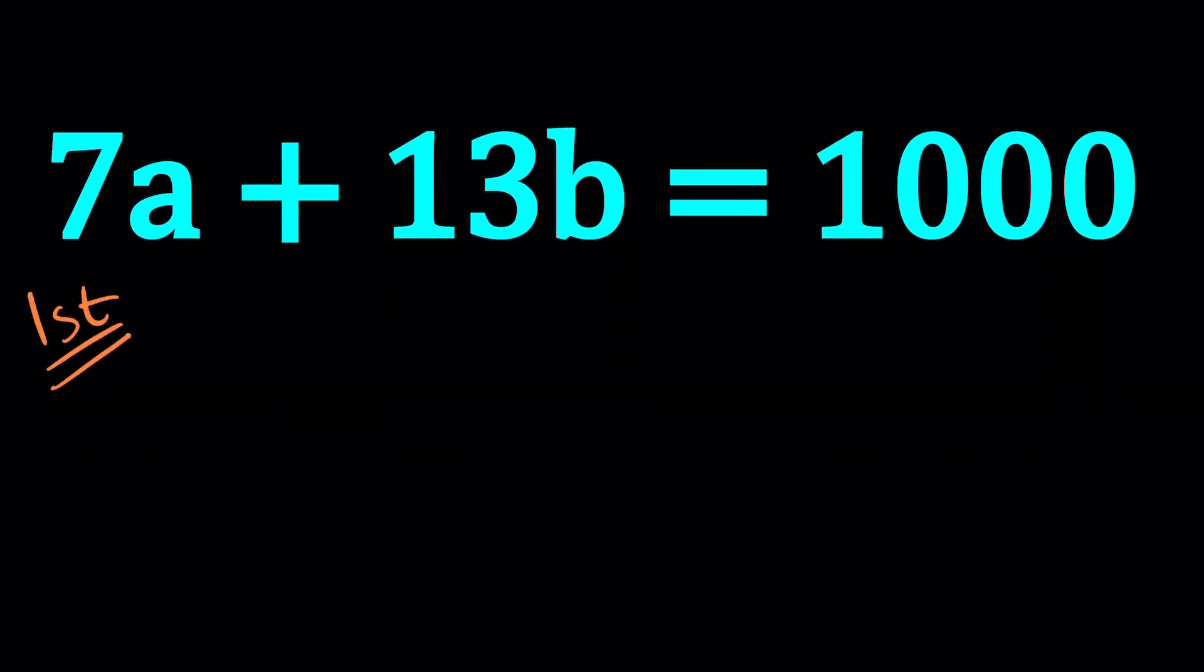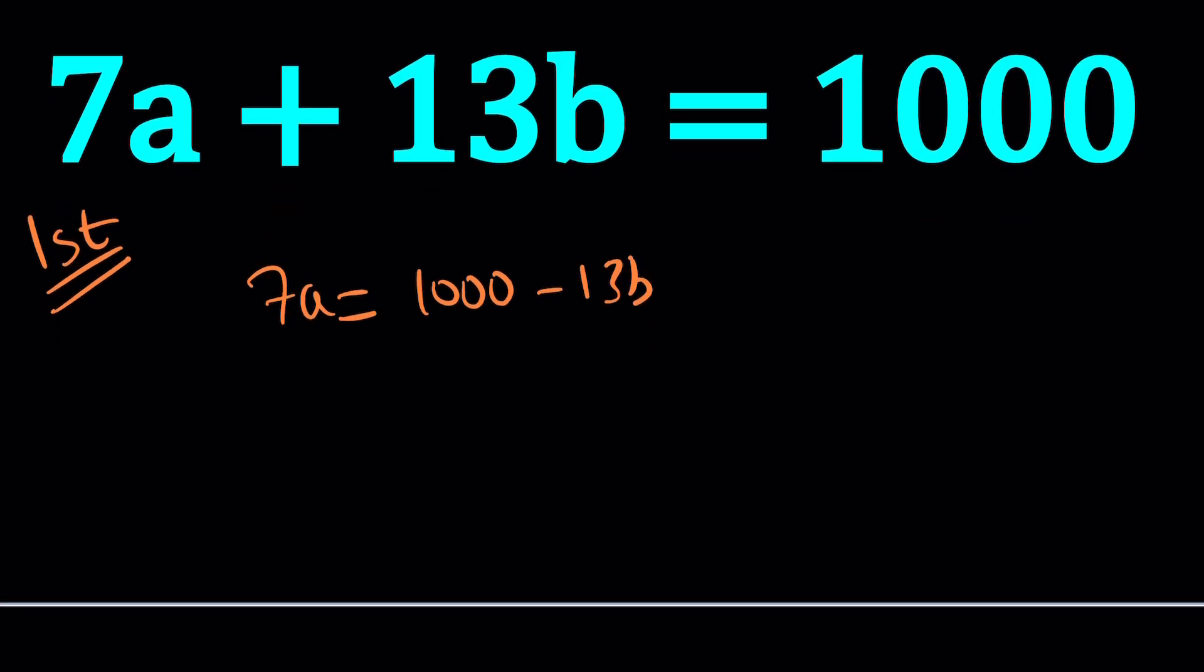For my first method, I'm going to isolate A. Let's subtract 13B from both sides, and then divide both sides by 7. From here, A equals 1,000 minus 13B divided by 7. Obviously, this doesn't help unless we break it down.